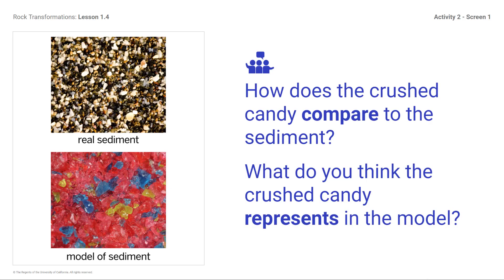How does the crushed candy compare to the sediment? What do you think the crushed candy represents in the model? You might respond: they are both made of small pieces, the candy is more colorful, and it represents sediment. How would you describe the crushed candy, and how could you turn the pieces of candy — or sediment — into solid rock? You might respond: the crushed candy is made of small pieces and consists of different colors, some pieces are really small like sand, and I could compact the pieces together to form rock.